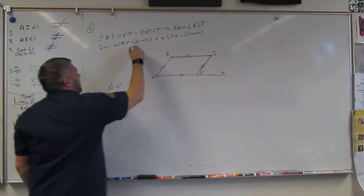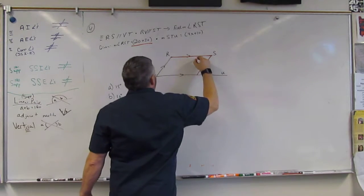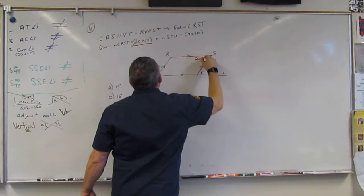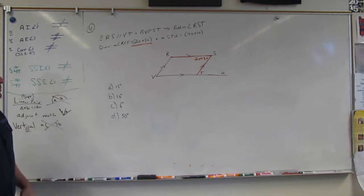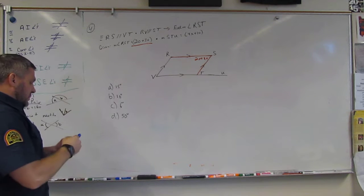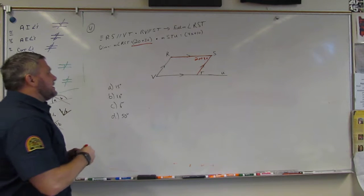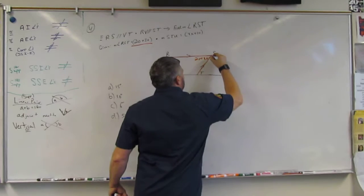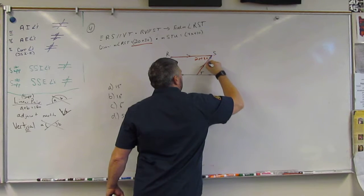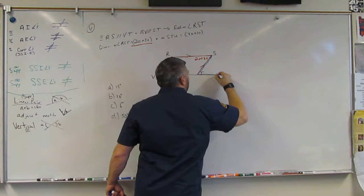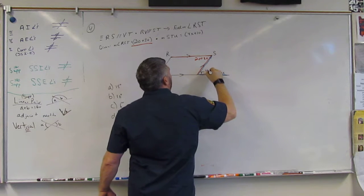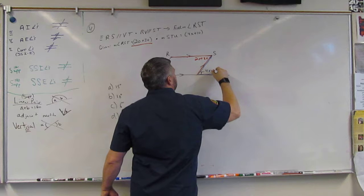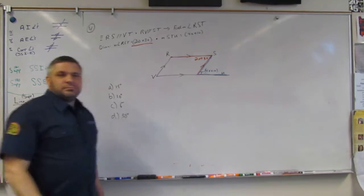Now, it says that RST is 20 plus 3X. And then it gives me this STU, right, they say is 4X plus 10.